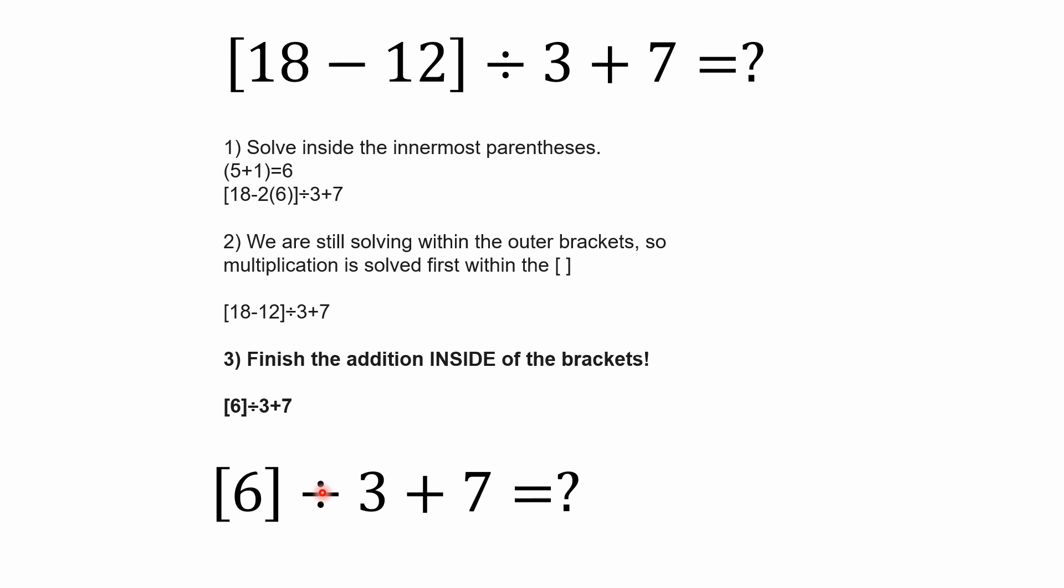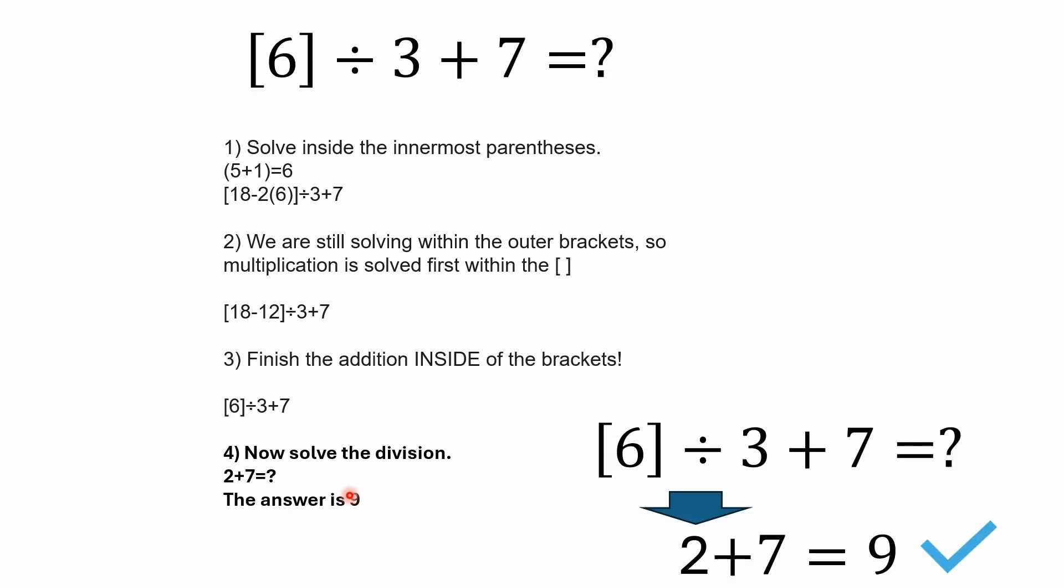We're finally left with division and addition. Well, the division has higher precedence than addition. Division is higher order than addition. So we do the six divided by three first. So what we're left with here is we solve that division. Six divided by three is two. Two plus seven is nine.